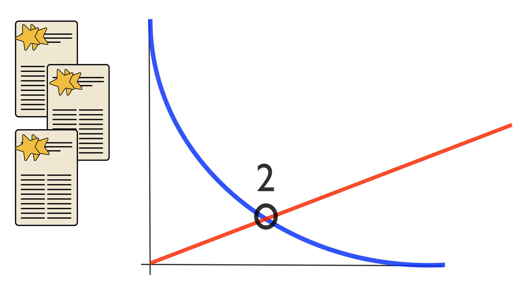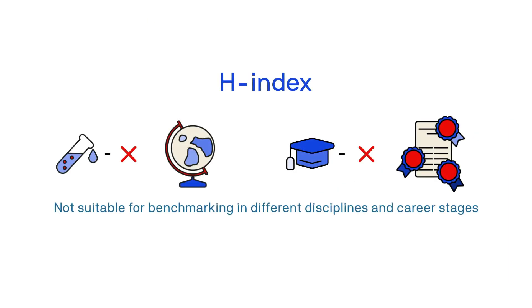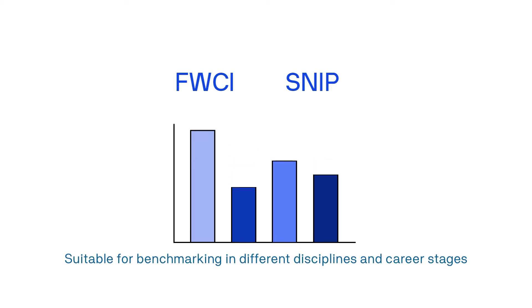This metric is not field-normalised, so it doesn't account for differences in how different disciplines publish and therefore wouldn't be used to benchmark researchers across different research areas or career stages. Some metrics, like FWCI and SNP, take into account the differences in research behaviour and allow comparison across disciplines.